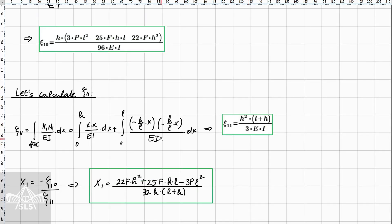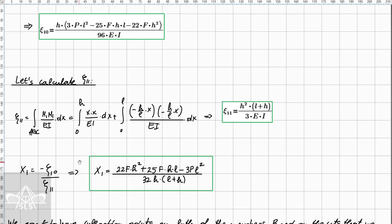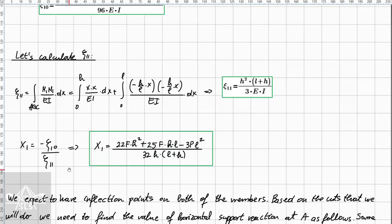Now that we have all the ingredients, we can determine the value of the redundant. Do not forget the minus sign. The result gives us the horizontal support reaction at point C parametrically.